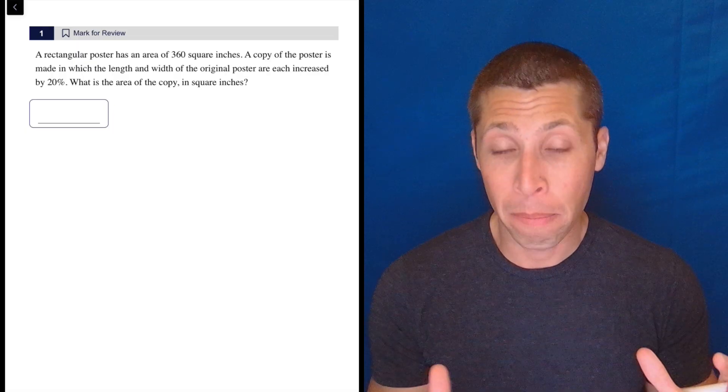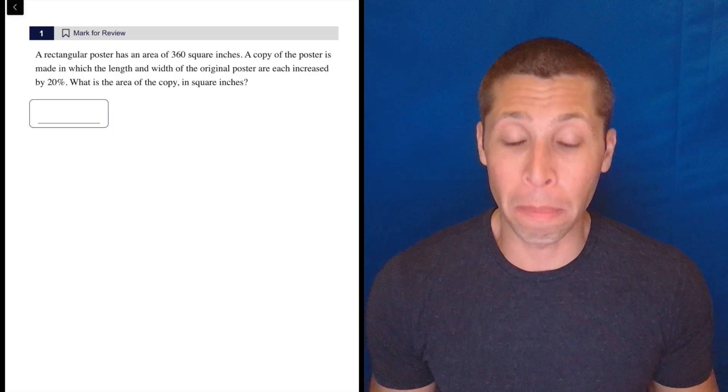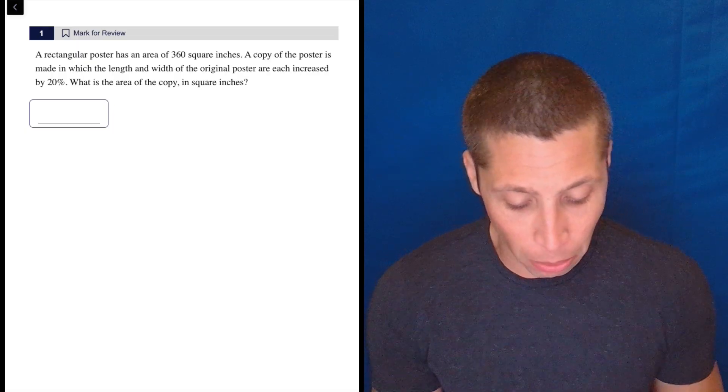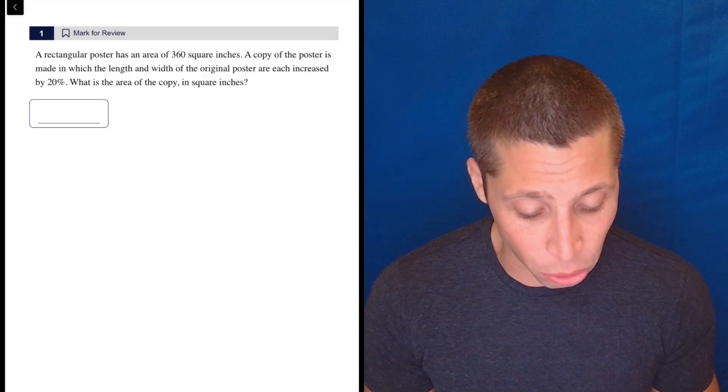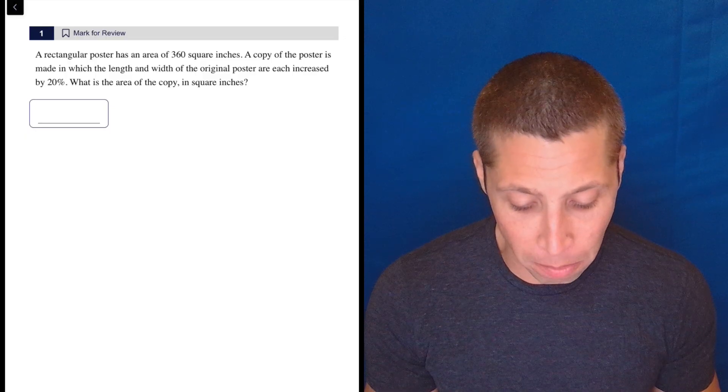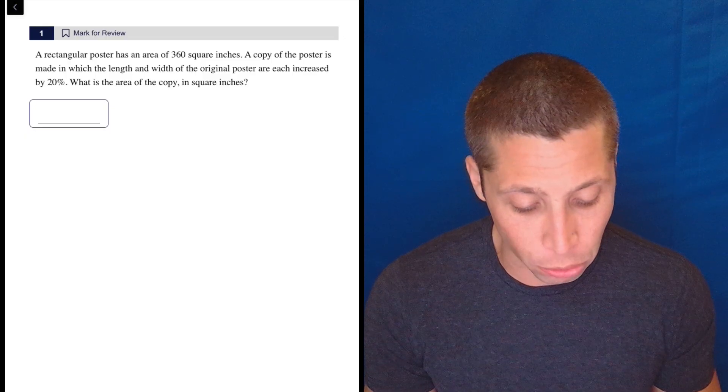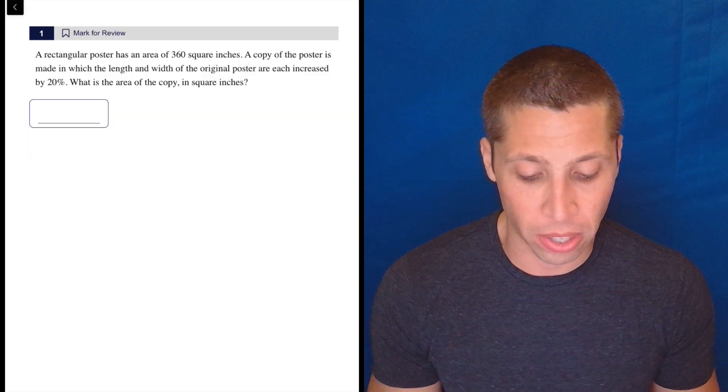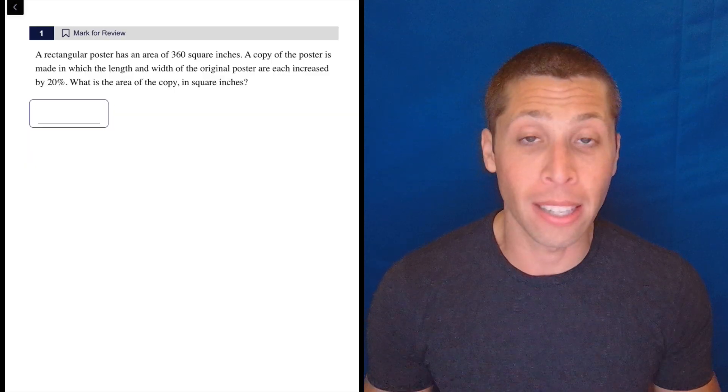Here we are given a shape, but we are missing crucial components of that shape. So look, a rectangular poster has an area of 360 square inches. A copy of the poster is made in which the length and width of the original poster are each increased by 20%. What is the area of the copy in square inches?